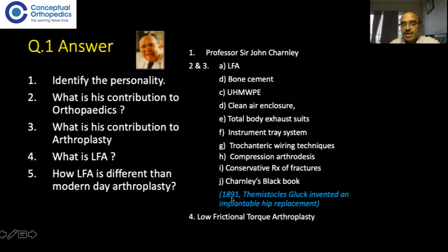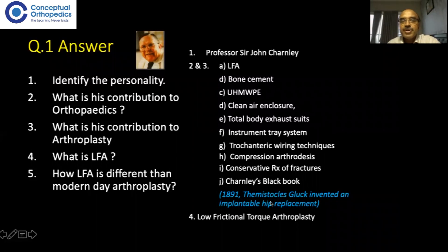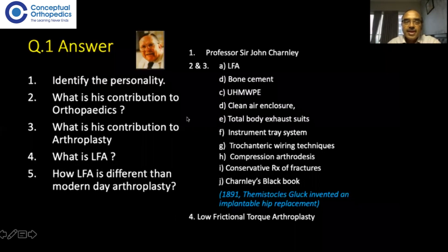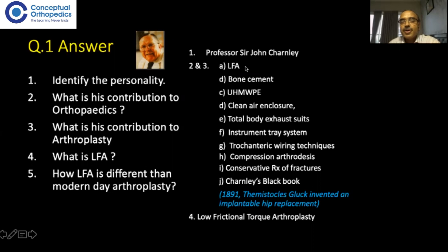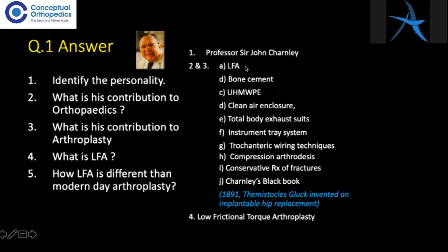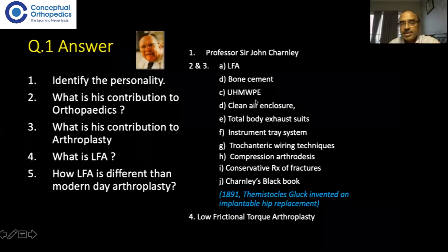Gluck in 1891 invented an implantable hip replacement, so Gluck was the first person. John Charnley did the modern-day hip replacement. His contributions to orthopedics include: LFA or low friction arthroplasty, bone cement, and ultra-high molecular weight polyethylene.